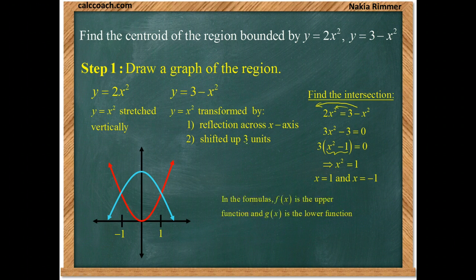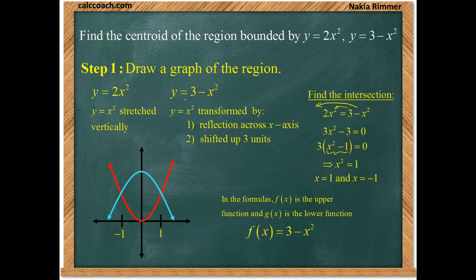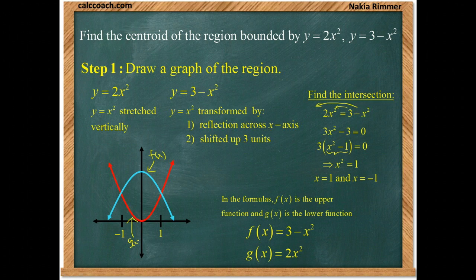Now, in the formulas, we have to know who's the upper function, who's the lower function. And so, we have 3 minus x squared is the upper function. We'll call that f of x. And 2x squared is the lower function. We'll call that g of x.